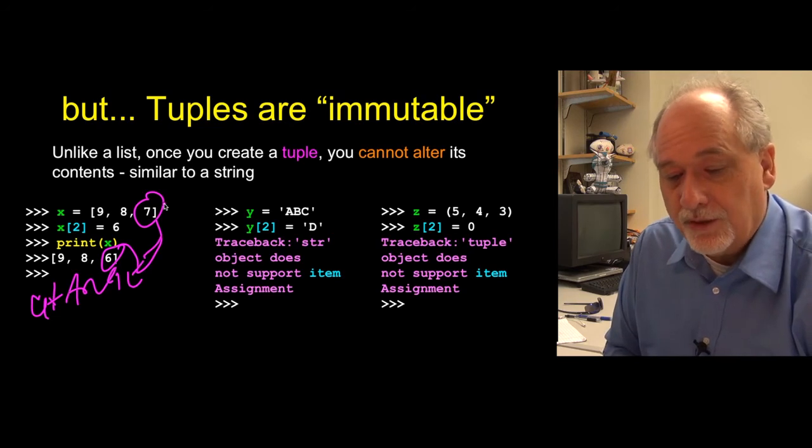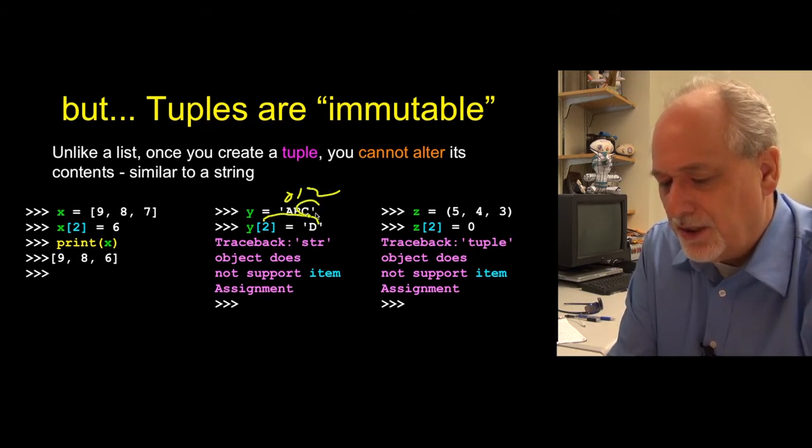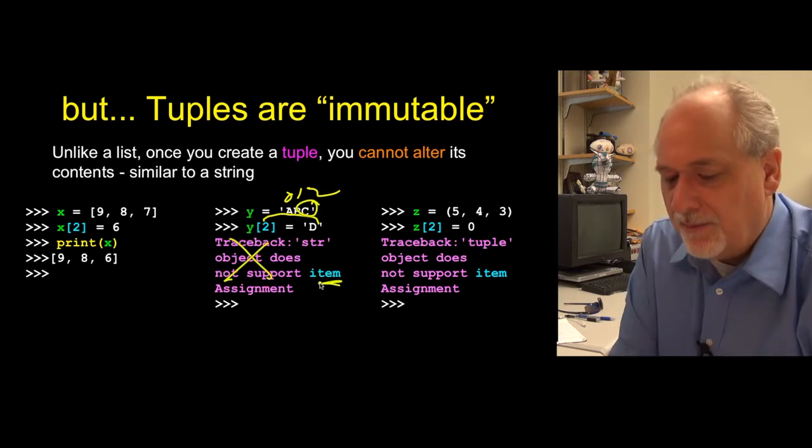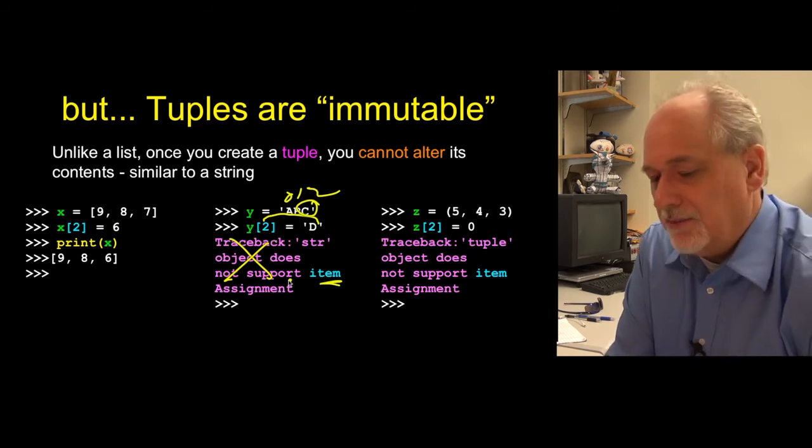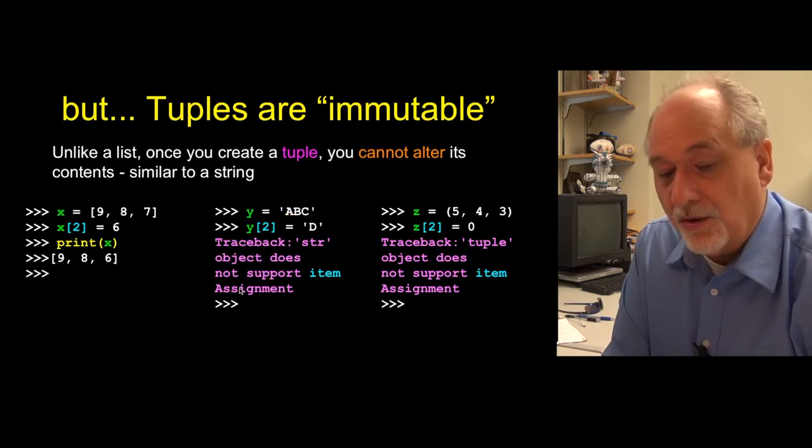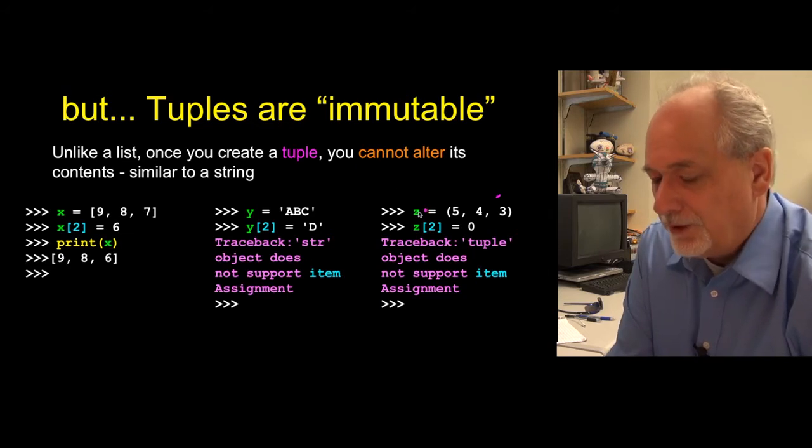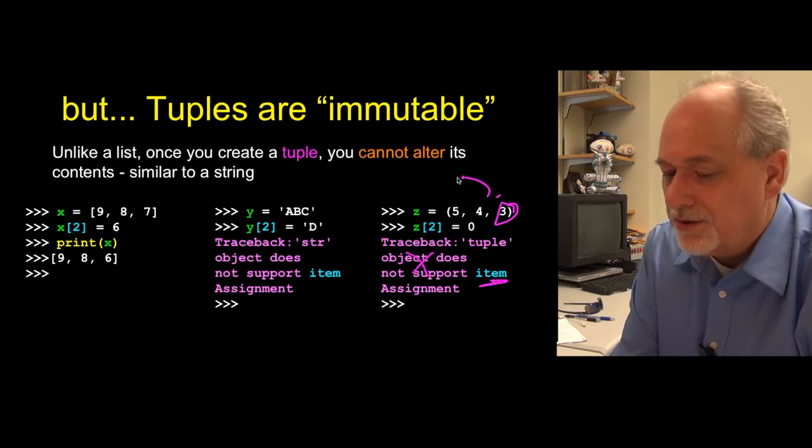But if we try to do that same thing with a string, so we say y equals a, b, c, and we know that this is position zero, one, and two, but if we try to say, let's change the c to a d by saying y sub two equals d, that is not allowed, and it says it doesn't support item assignment, and this little bracket, x sub two is what they call item assignment inside of Python. And so if we do the same thing with a three-element tuple, put that in z, and we try to change this slot to be a zero, it's gonna blow up, because it's the exact same thing. And that has to do with the fact that once this assignment is made, this is not modifiable.